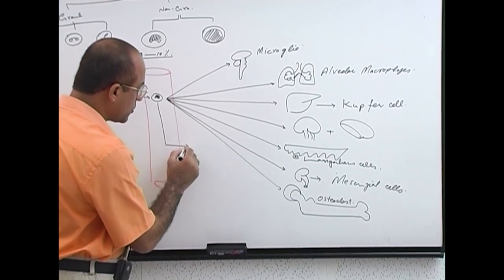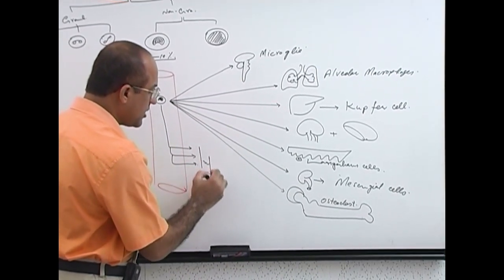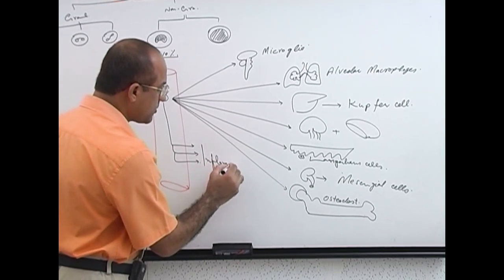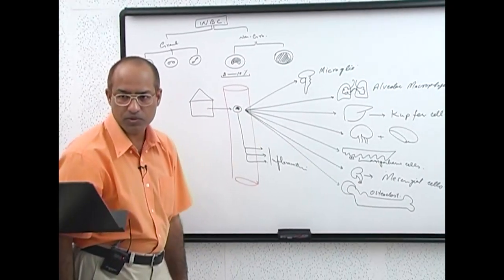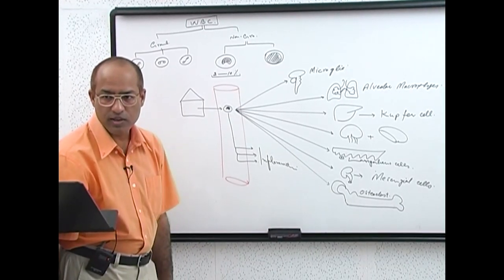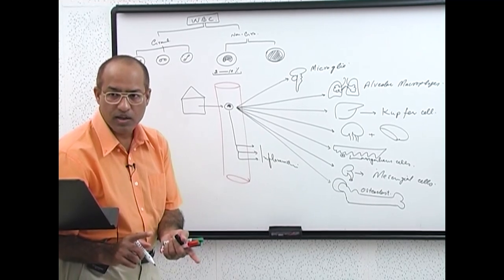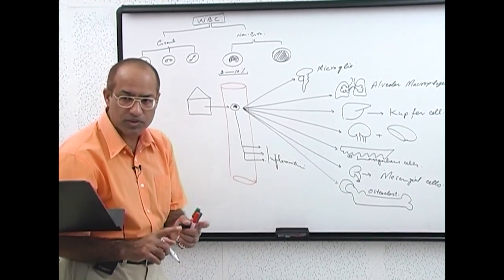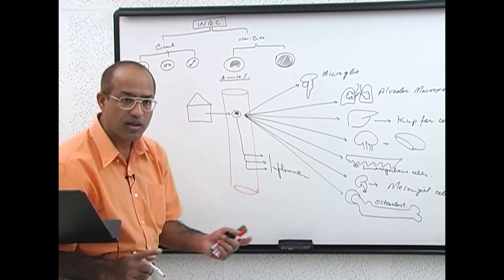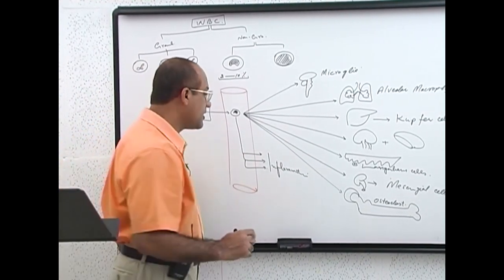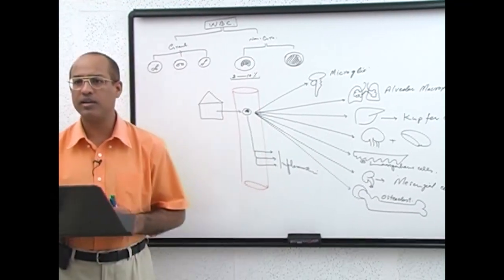Macrophages may also go to tissue when it is inflamed. During inflammation, macrophages are second to neutrophils to appear in the inflamed tissue. Neutrophils and macrophages together are the cells of acute inflammation. But if macrophages are with lymphocytes and there are no neutrophils, then these are the cells of chronic inflammation.